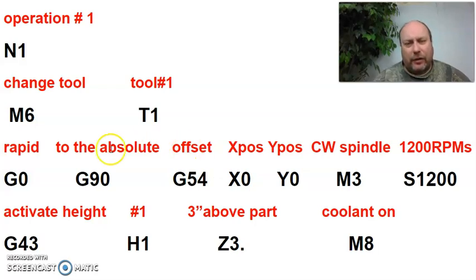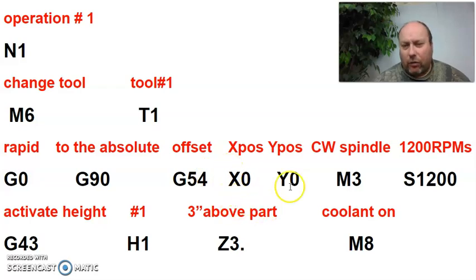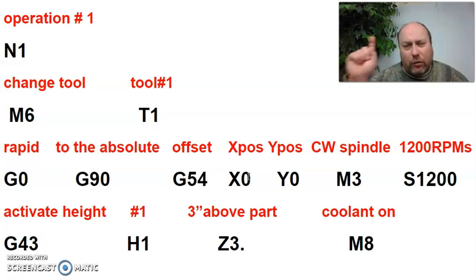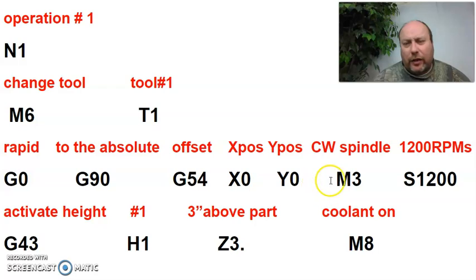You're saying: I want you to rapid to the absolute points using this zero to X zero, Y zero. You can put anything you want there. If you're going to drill a hole at X1, Y1, you'd put X1. with a decimal point — a machine always needs a decimal point after the whole number. M3 means: okay, we're at that position, turn the spindle on clockwise. S is the speed — S1200 means 1200 RPMs.